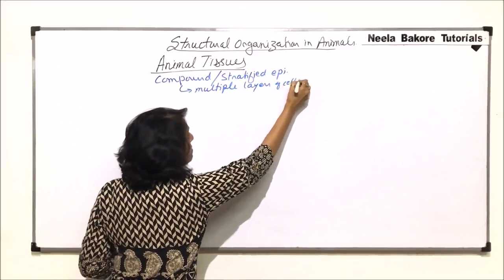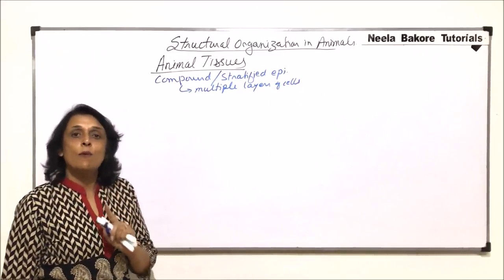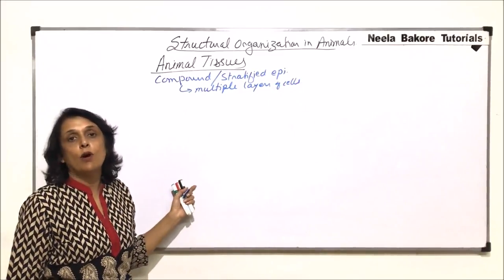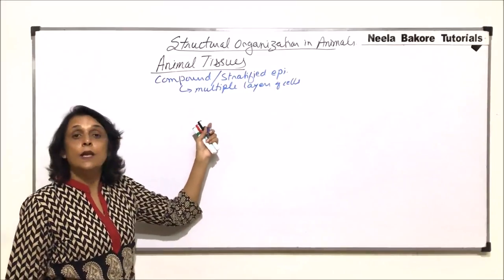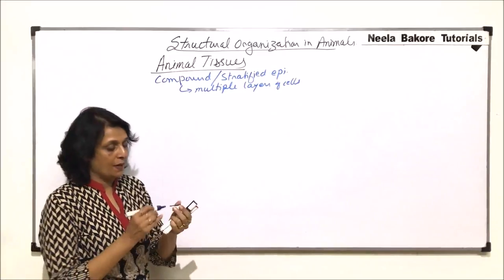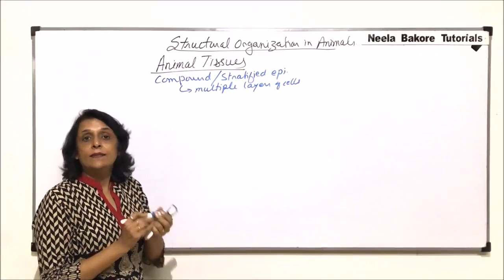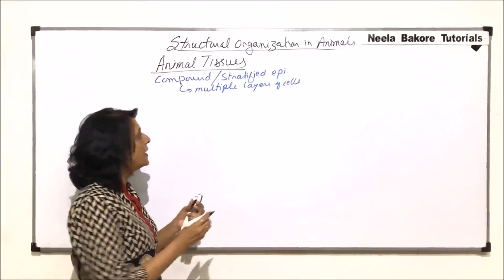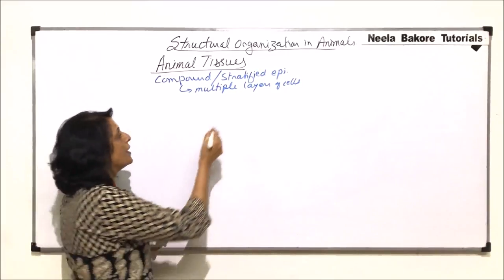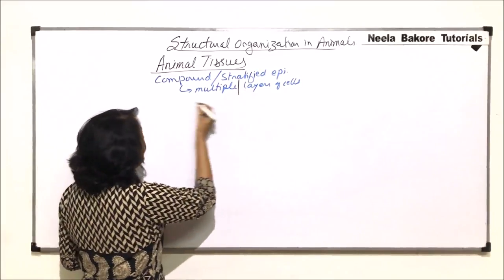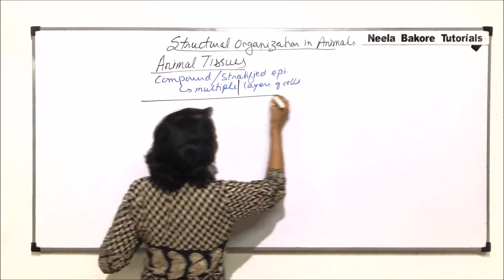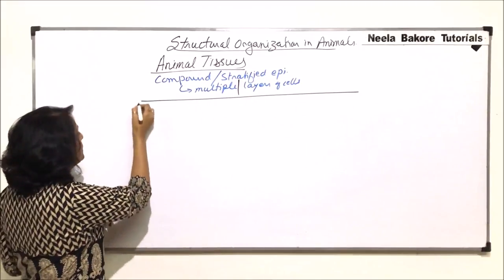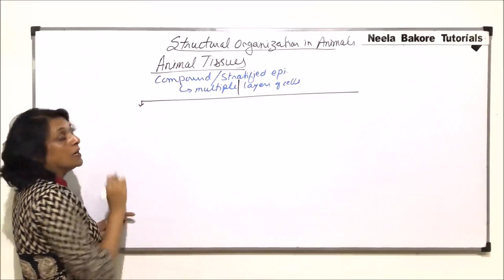In case of simple epithelium, there was only one layer, be it squamous, cuboidal, or columnar. Here, there would be multiple layers. This epithelium is also classified into the same three categories, that is, on the basis of the shape of the cells.